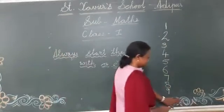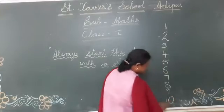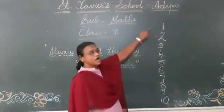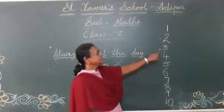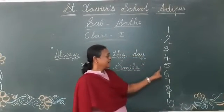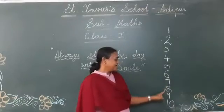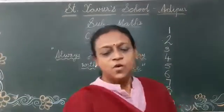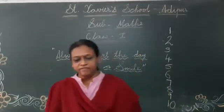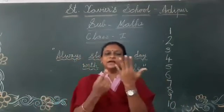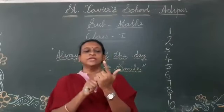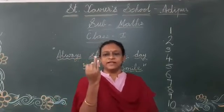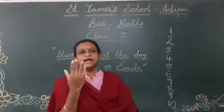Now, the last number here is 10. 1, 2, 3, 4, 5, 6, 7, 8, 9 and 10. And I will tell you how many fingers we have in our 2 hands — 10. Count: 1, 2, 3, 4, 5, 6, 7, 8, 9 and 10.